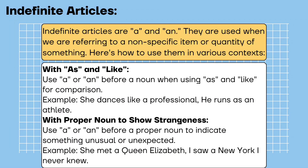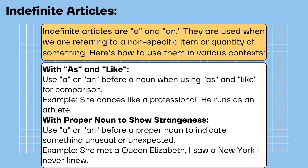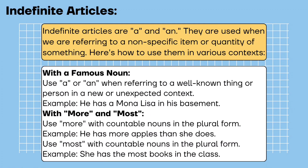With proper nouns to show strangeness: use 'a' or 'an' before a proper noun to indicate something unusual or unexpected. Example: she met a Queen Elizabeth I saw in New York I never knew. With a famous noun: use 'a' or 'an' when referring to a well-known thing or person in a new or unexpected context. Example: he has a Mona Lisa in his basement.